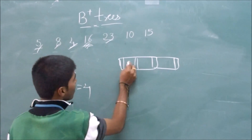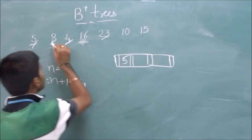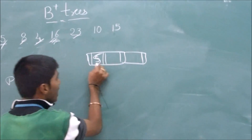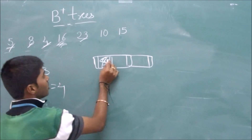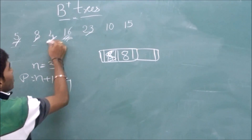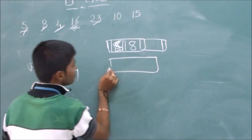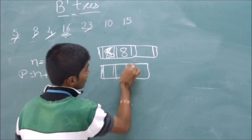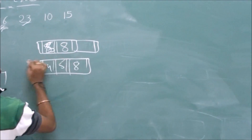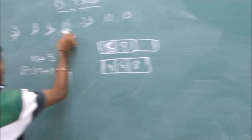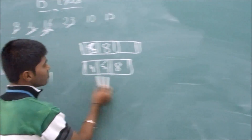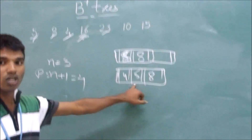We have 5 — it gets placed here. We have 8 next, so 8 comes here. So 5 and 8 are in the node. Then we have 4 — they should be arranged in order, so we get 4, 5, 8. Then we have 16, but there is no space for 16 to be placed in this node.